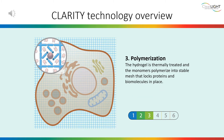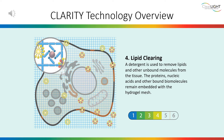Step 3: The hydrogel is thermally treated and the monomers polymerize into a stable mesh that locks proteins and biomolecules into place. Step 4: Lipid Clearing. A detergent is used to remove lipids and other unbound molecules from the tissue. The proteins, nucleic acids, and other bound biomolecules remain embedded within the hydrogel mesh.